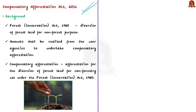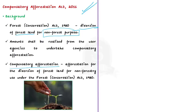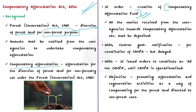Under the Forest Conservation Act of 1980, diversion of forest land for non-forest purposes is allowed. However, the central government stipulated that a particular amount must be realized from user agencies, to be used for compensatory afforestation and related conservation and development activities. Compensatory afforestation means afforestation done to compensate for diversion of forest for non-forestry use. The amount collected helps mitigate the impact of forest land diversion. The Supreme Court ordered the creation of the Compensatory Afforestation Fund, where all money received from user agencies would be deposited.